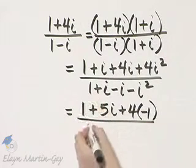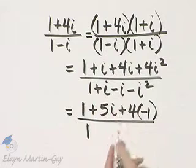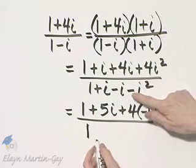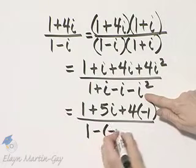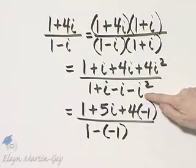In the denominator, I have 1. I minus I is 0. Again, be very careful. That's minus. And then I squared is negative 1.